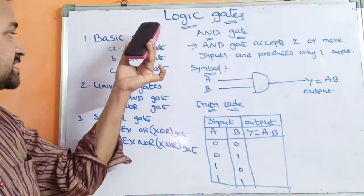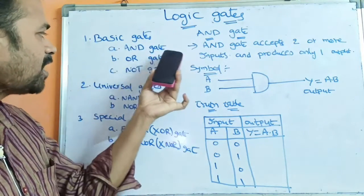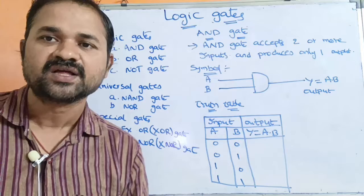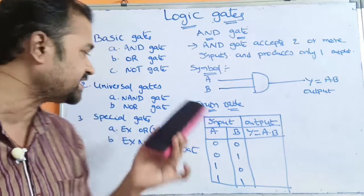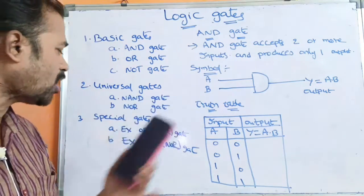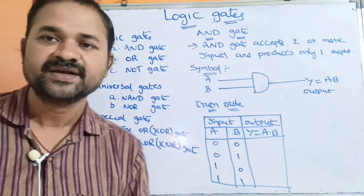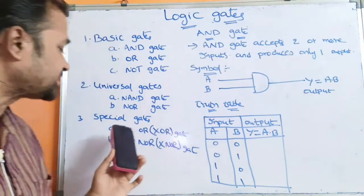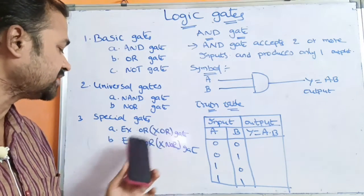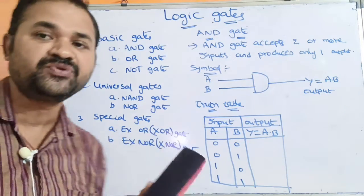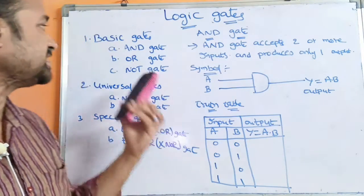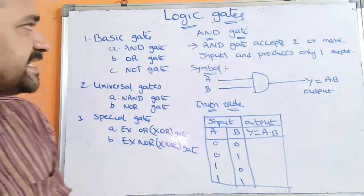Basic gates are AND gate, OR gate, and NOT gate. Universal gates are NAND gate and NOR gate. Special gates are exclusive OR gate and exclusive NOR gate. First, let us see about basic gates.